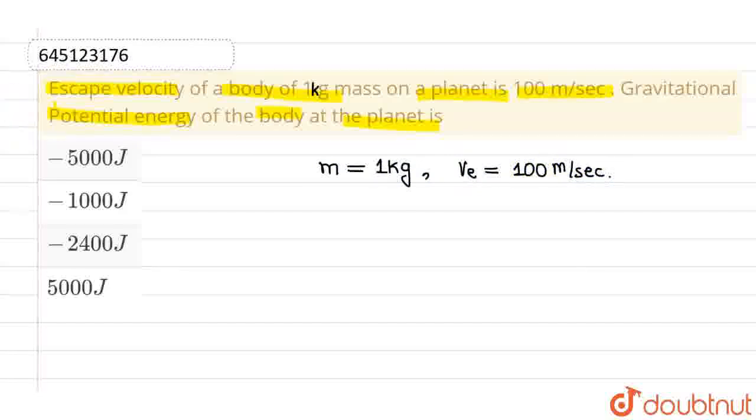Now we have to find out gravitational potential energy. First, we know the formula for escape velocity, which is the square root of 2GM/R. This is the formula for escape velocity, and this is given as 100 m per second.